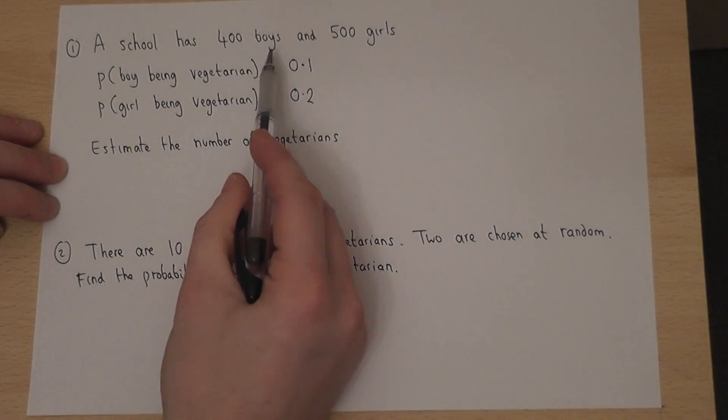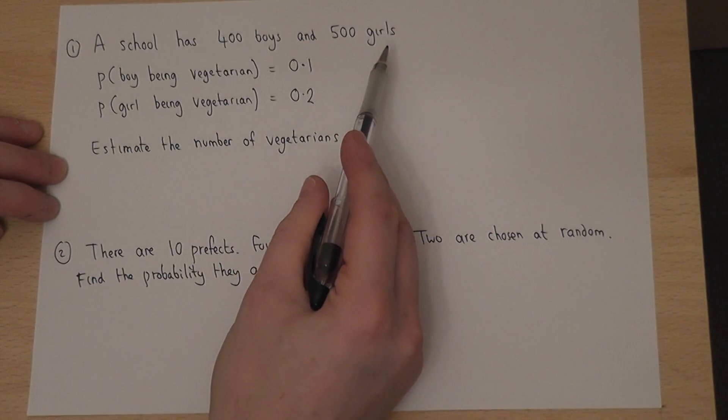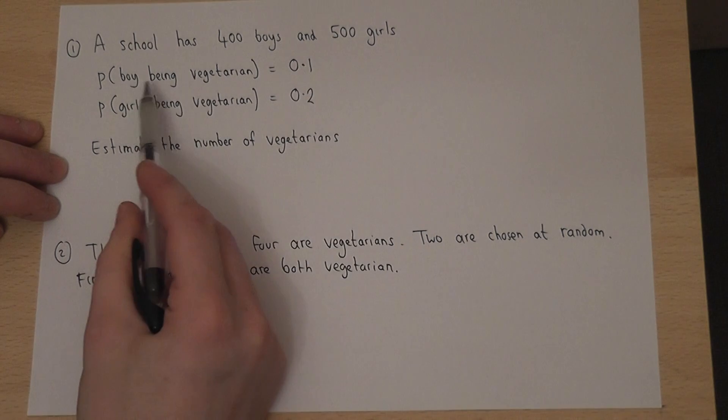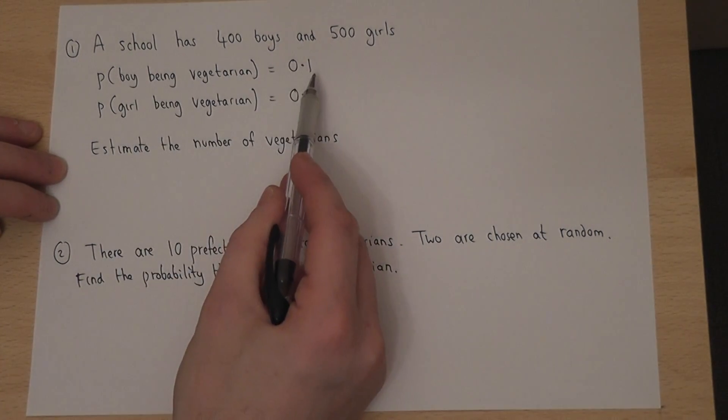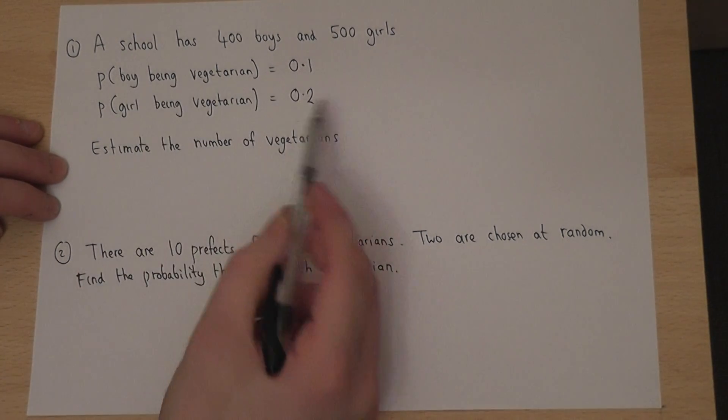In part 1, we're told that there are 400 boys and 500 girls, and the probability of a boy being vegetarian is 0.1, and of a girl is 0.2.